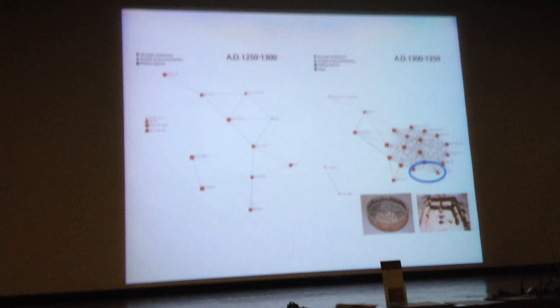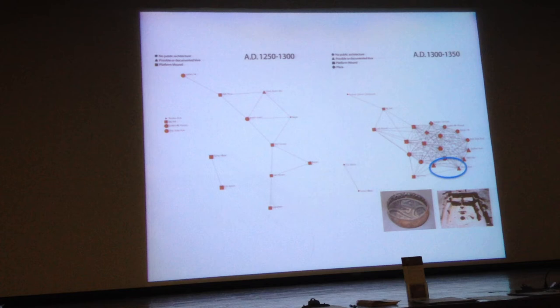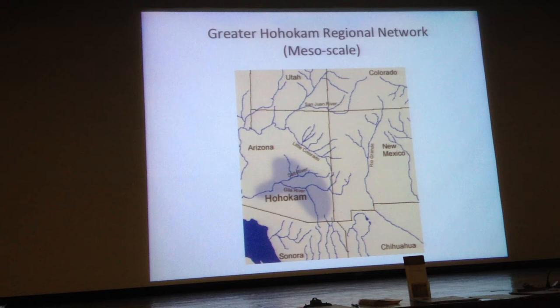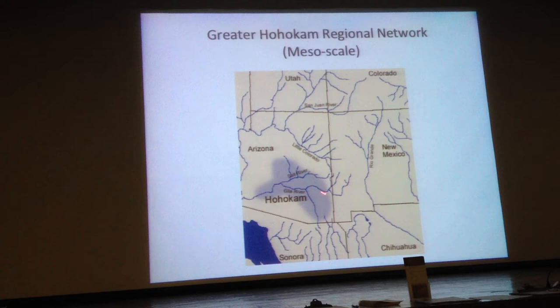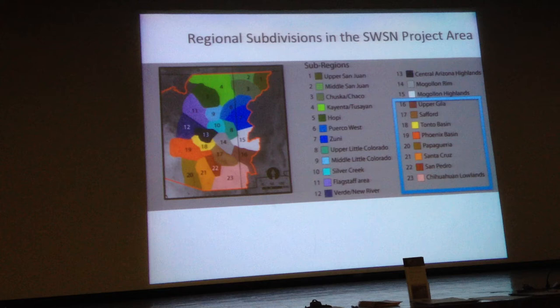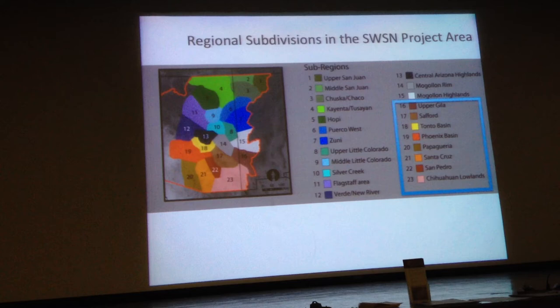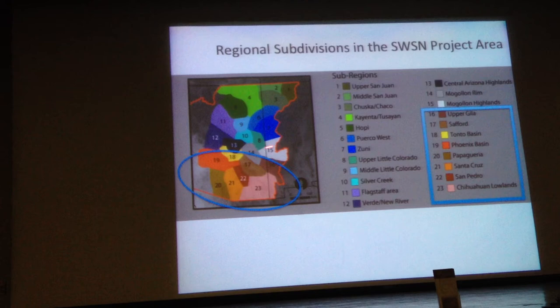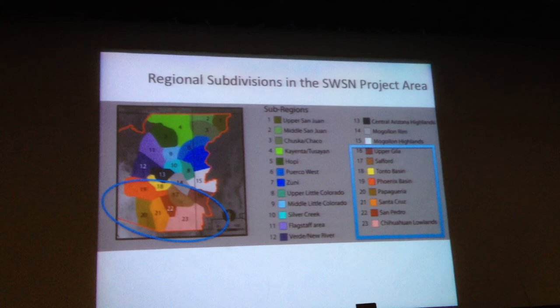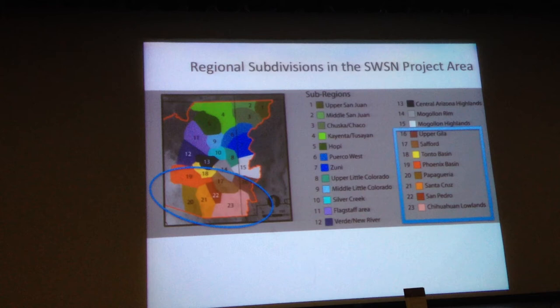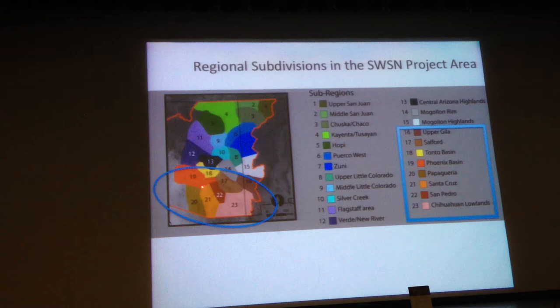Let's bump up a scale and look at the Hohokam area in general, going out to the upper Gila and the Tonto Basin. We're looking at the southern Southwest and how the network changes with migration. The Santa Cruz area is where we are; Phoenix Basin is in red; Chihuahua Lowlands in a salmon color.